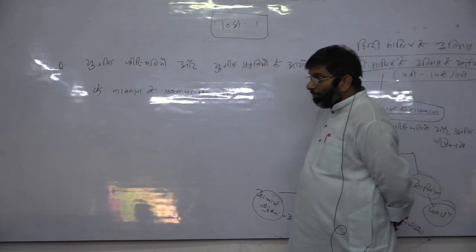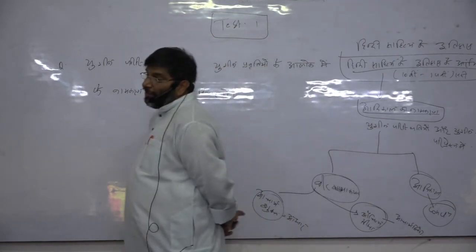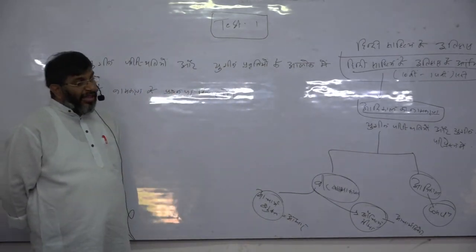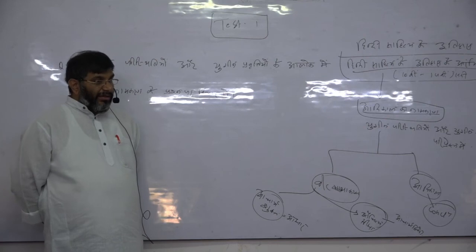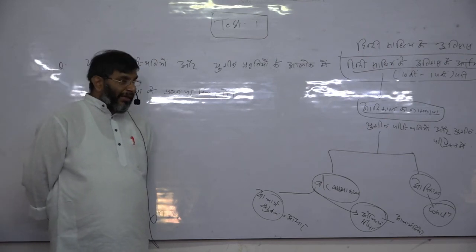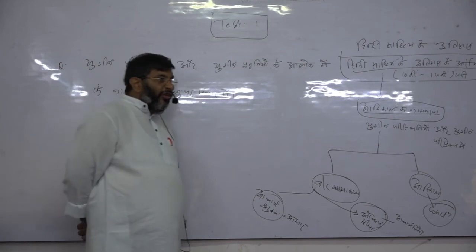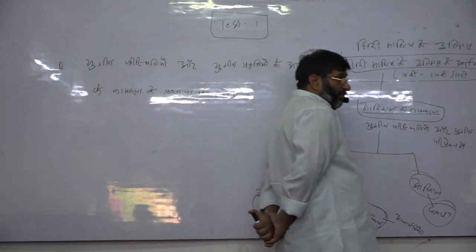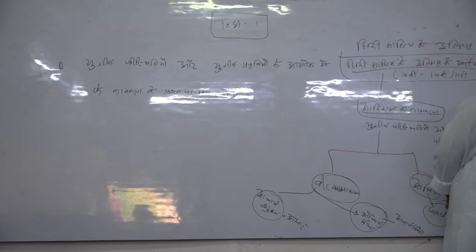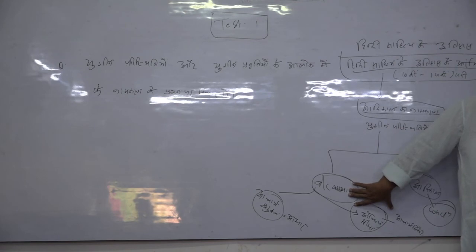Aur adhikaal naam is baat ka bhi sanket lekar aata hai ki yahan Hindi sahit ke, yahan kaalkhande Hindi sahit ka arambhik kaalkhande. Privirhtiyan ho, visheshatayen ho, samvedna ho, bhasha ho. Parvarti daur mein Hindi sahit ka jo svaroop ubar karke aata hai, uske bhi jarooren yahan par maujud hain.